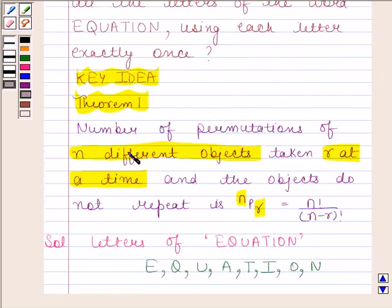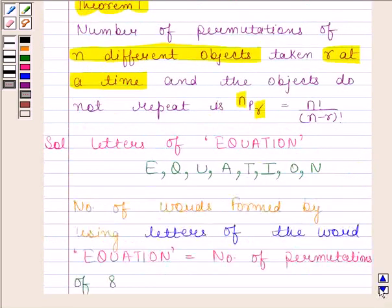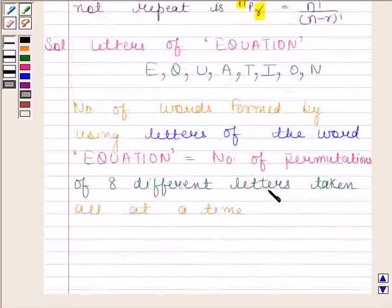By theorem 1, we know that number of permutations of n different objects taken r at a time and the objects do not repeat is nPr. Here, n different objects are 8 different letters and r is also 8 since all the letters has to be used.